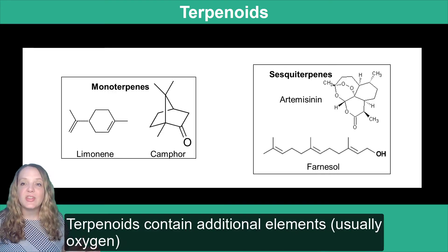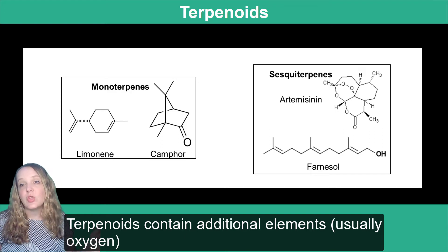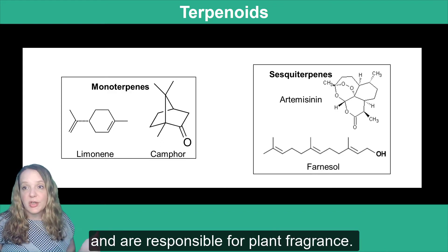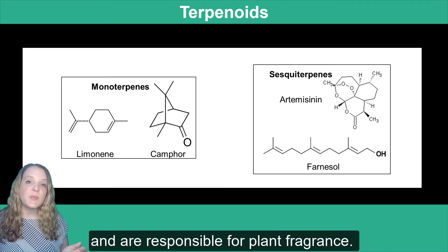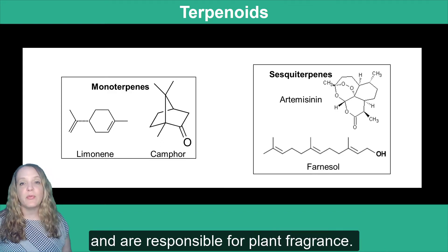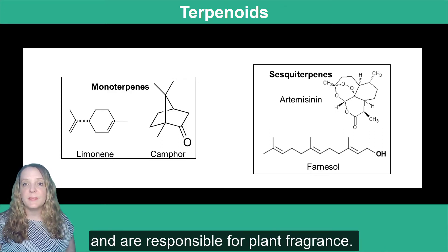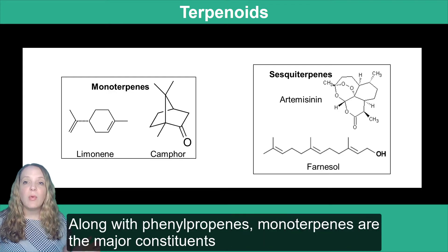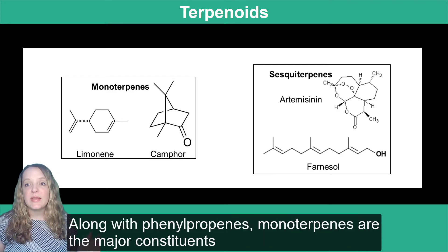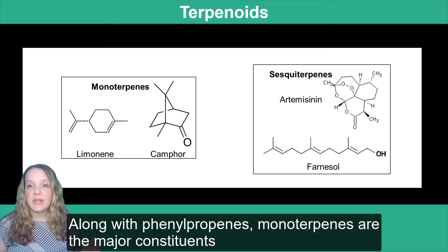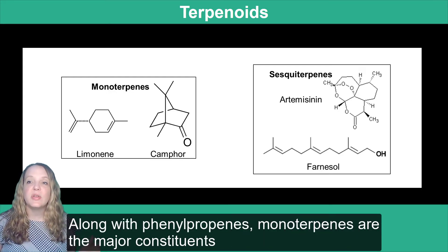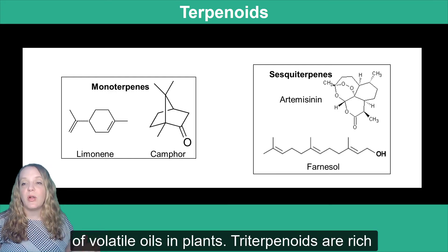Terpenoids contain additional elements, usually oxygen, and are responsible for plant fragrances. Along with phenolpropenes, monoterpenes are the major constituents of volatile oils in plants.